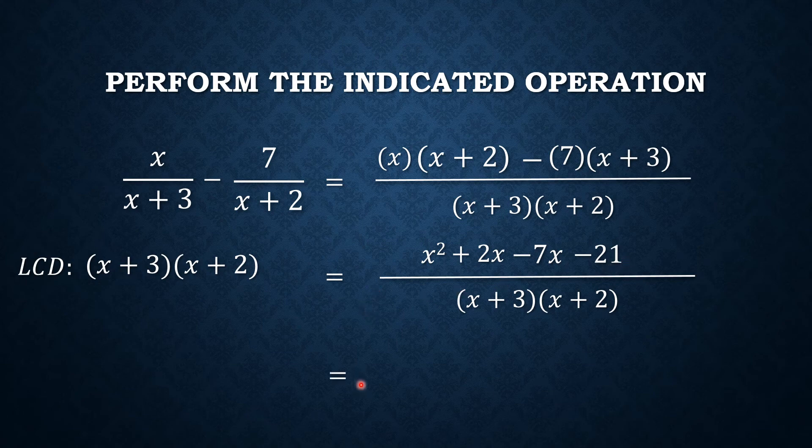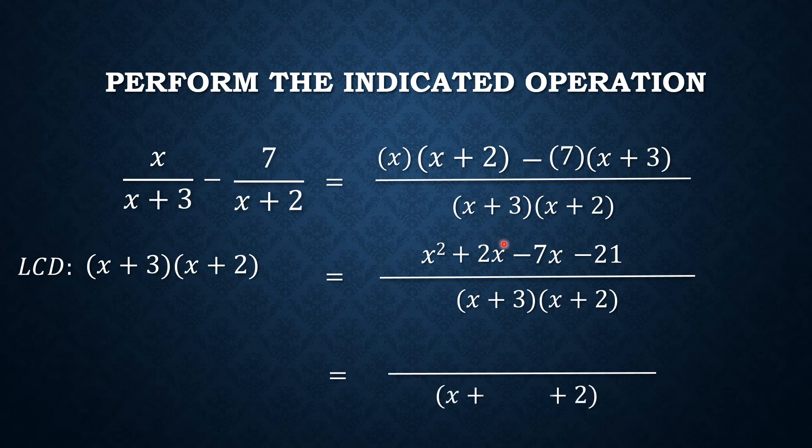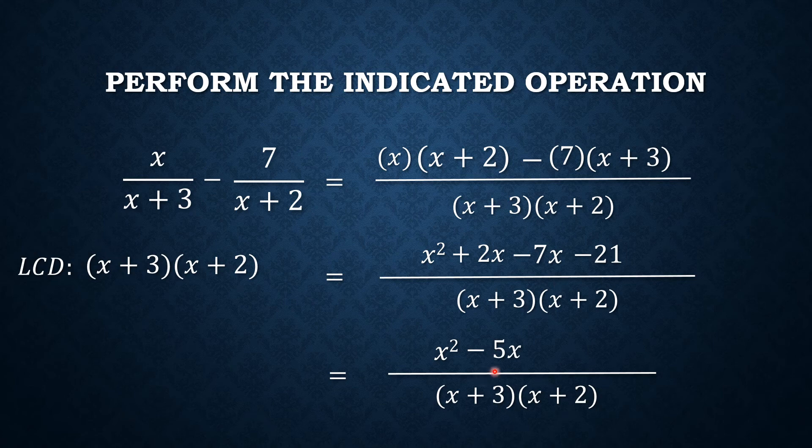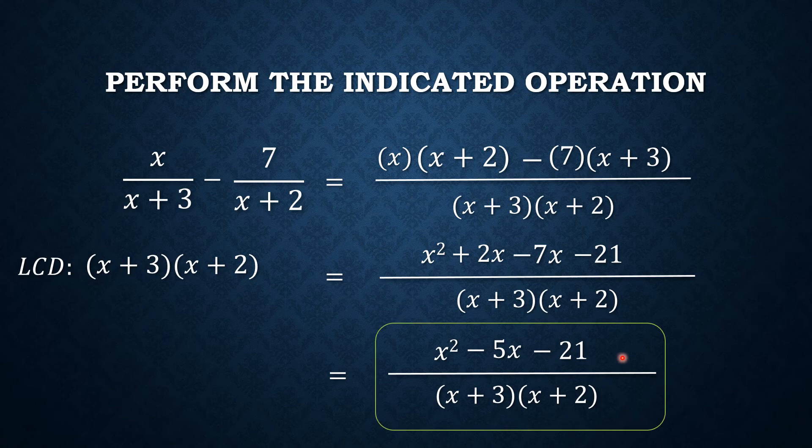Combining similar terms, we now have x squared. 2x minus 7x is negative 5x. And then we also have negative 21. And that's it. That is our answer when we subtract these two rational expressions.